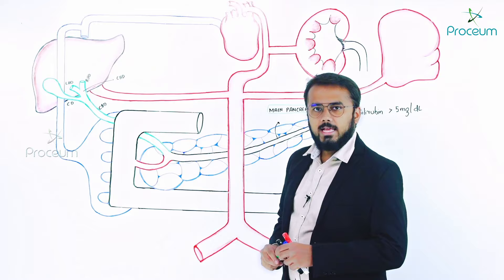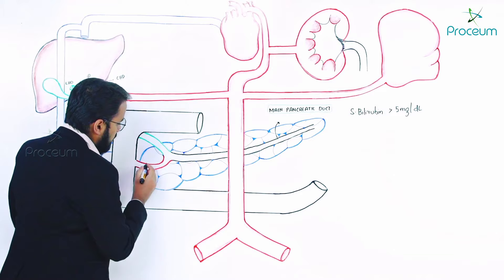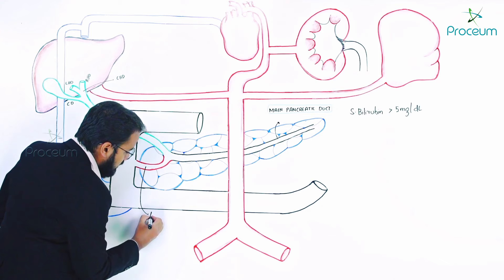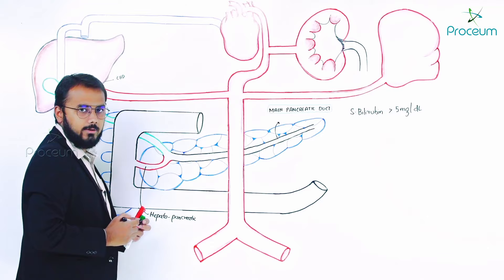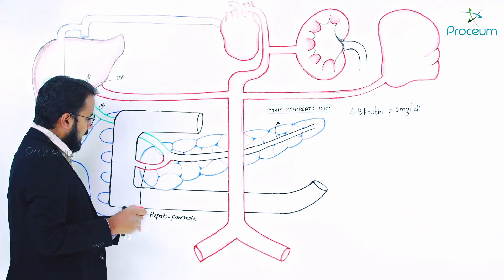This duct is formed by contributions from the liver and the pancreas, so it is called the hepatopancreatic duct. Surrounding this hepatopancreatic duct, there is a very special sphincter called the sphincter of Oddi. The hepatopancreatic duct is opening into which part of the duodenum?